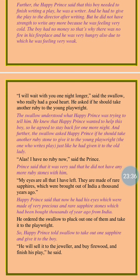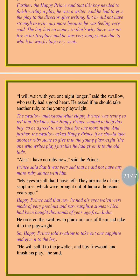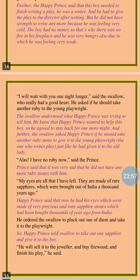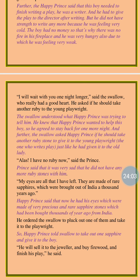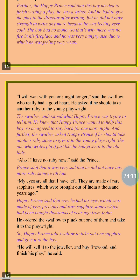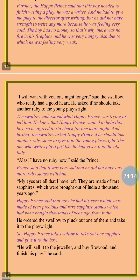'I will wait with you one night longer,' said the swallow, who really had a good heart. He asked if he should take another ruby to the young playwright. Now the swallow understood what the Happy Prince was trying to tell him. He said the swallow bird asked the Happy Prince if he should take another ruby stone to give to the young playwright, just as he had given to the old lady — he knew the decision of the Happy Prince. 'Alas, I have no ruby now,' said the prince, getting worried that there was no more ruby in the sword.